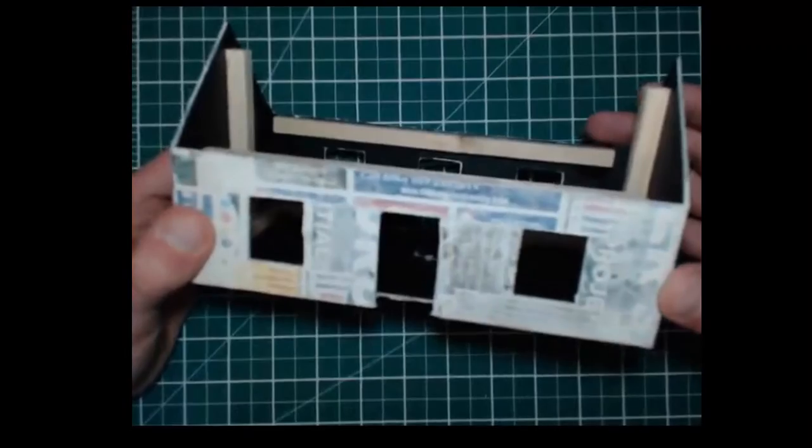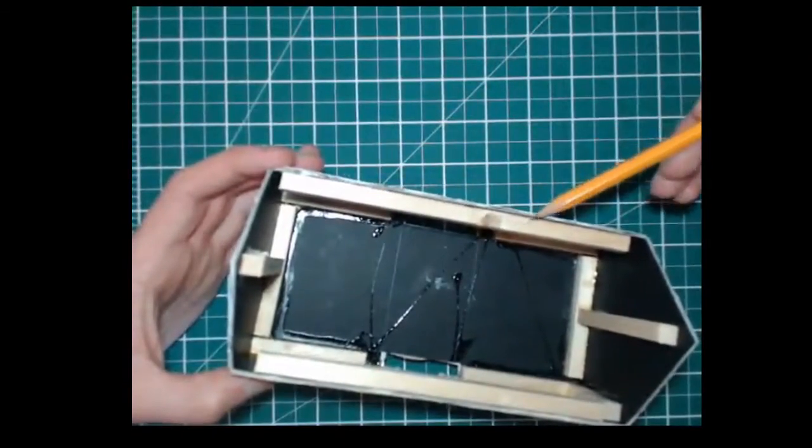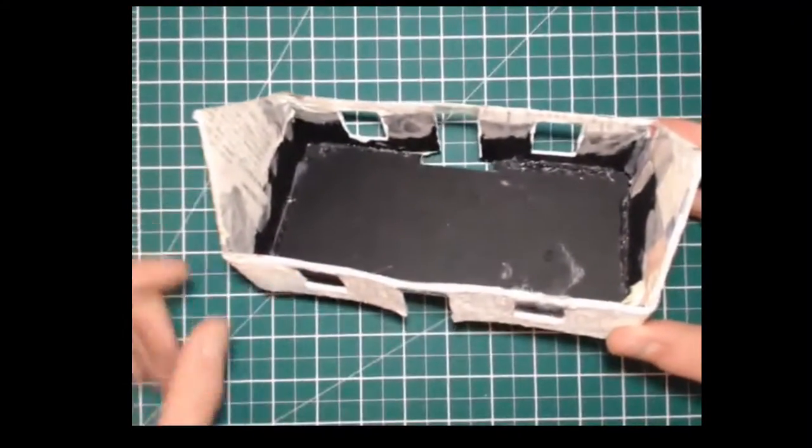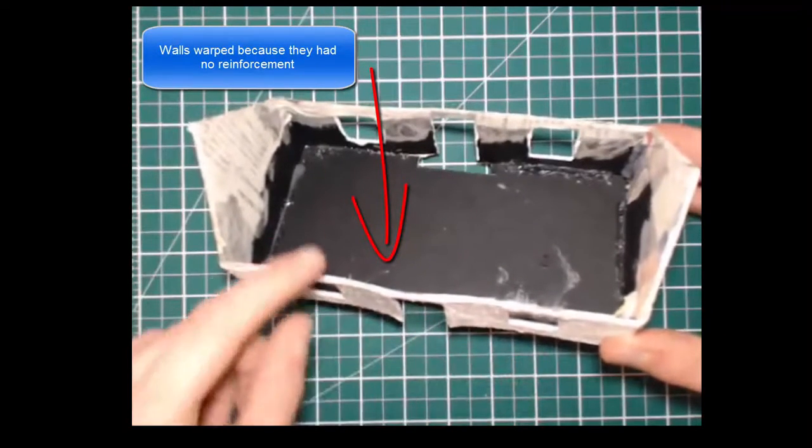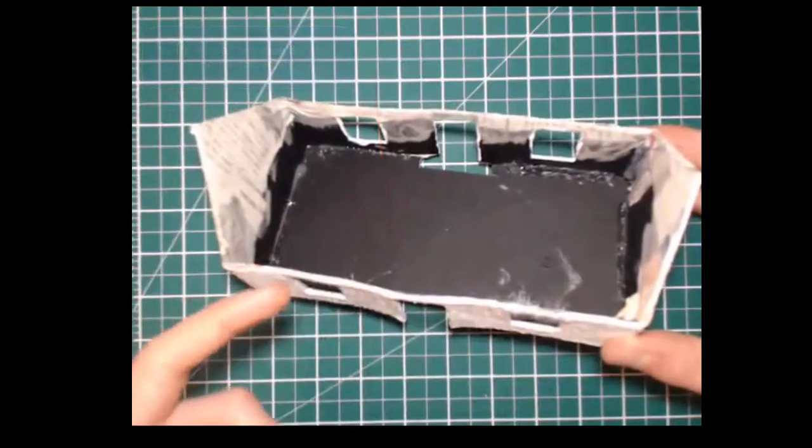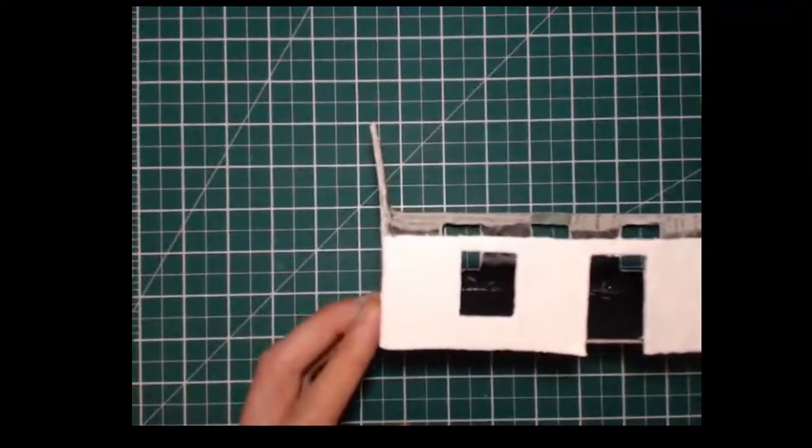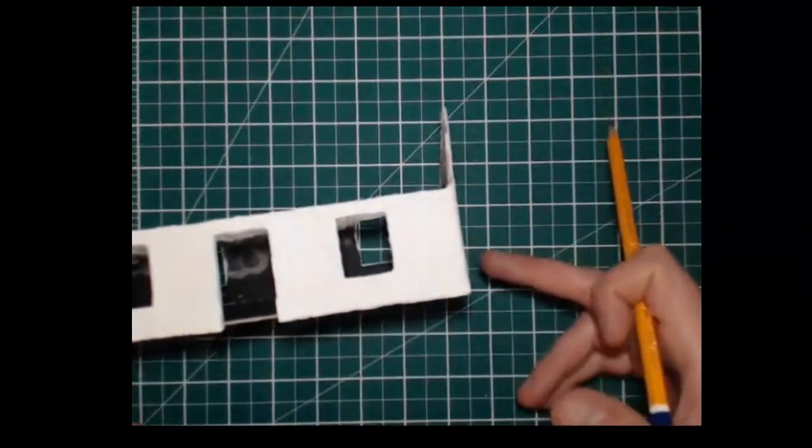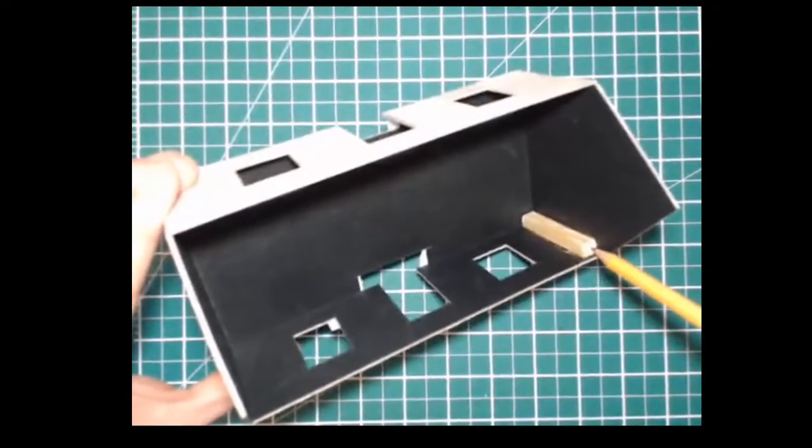The first time I attempted this without these timber reinforcements, you can see the walls began to curve on me. That's because we applied a wet finish to dry card and it caused some warping and shrinkage to happen. The sides actually warped quite a bit as well. You can see the curve there along here. So to prevent that and to strengthen up our model, we add in these small pieces of timber inside here.